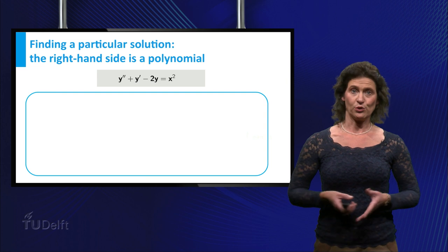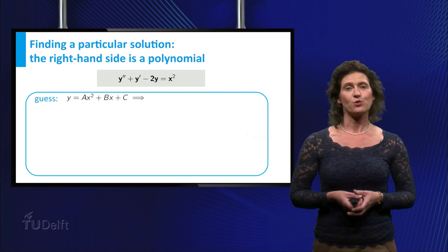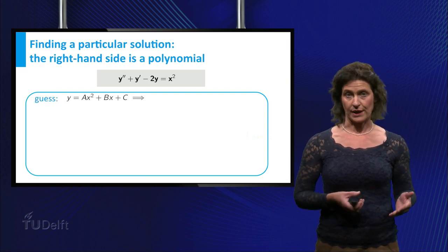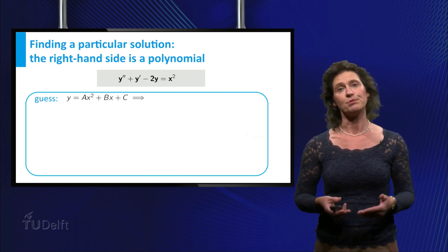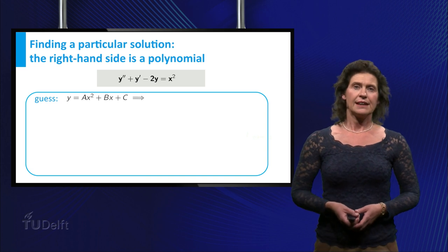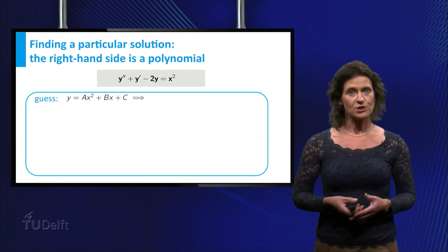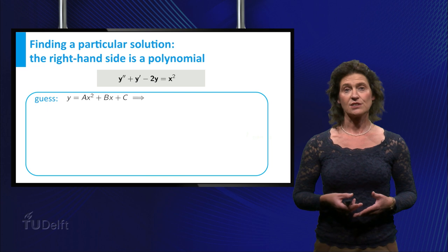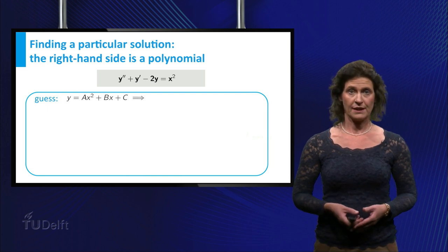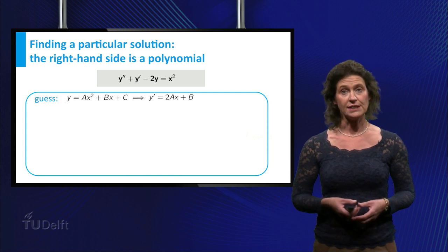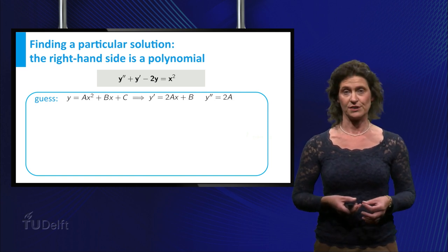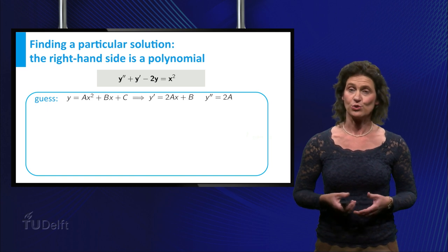A general polynomial of degree 2 is of the form a times x squared plus b times x plus c, for some real numbers a, b and c. Let's try what happens when we take such a function as our guess for the solution y. Then the derivative of y equals 2 times a times x plus b and the second derivative of y equals 2 times a.